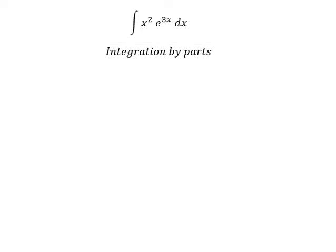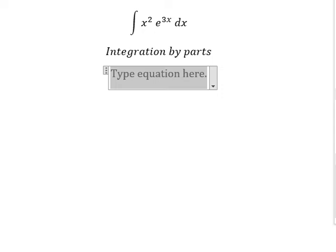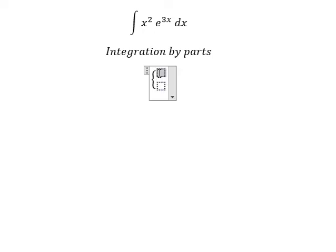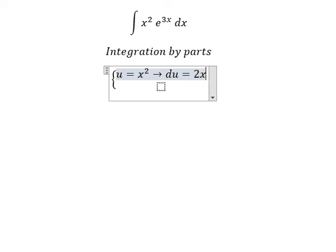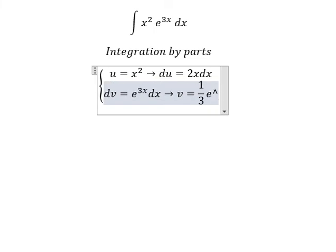So I need to put u equals to x squared. If I do first derivative for both sides, we have du equal to 2x dx. dv we have e to the power of 3x dx. The integration of this one, we have v equals to 1 over 3 e to the power of 3x.